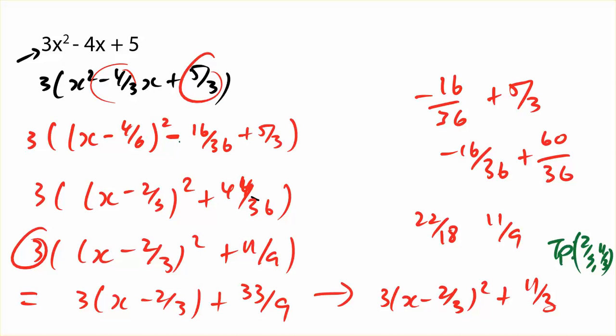And then I put a negative after the bracket, and I square the number inside the bracket, and I get 16 on 36. I drop the constant term down the bottom. And then all I have to do is just simplify.